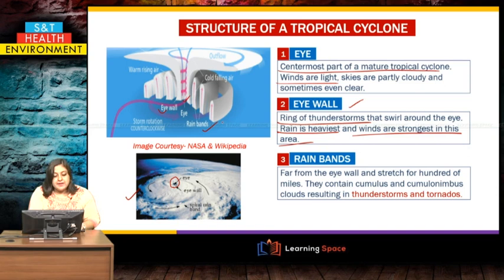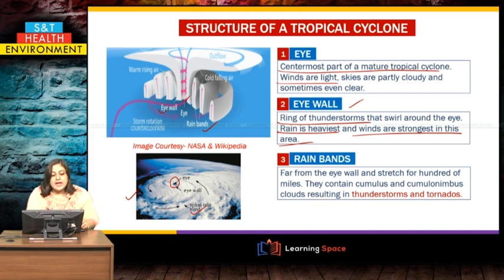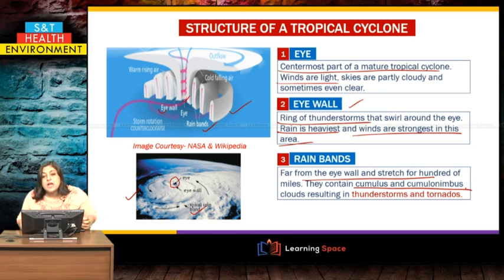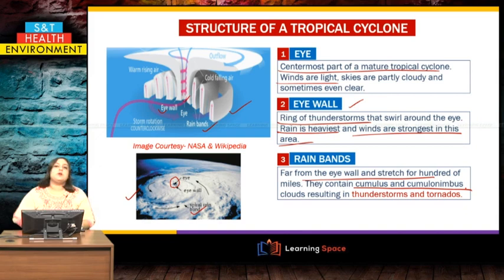The eye wall has the strongest winds and the maximum rainfall. Beyond the eye wall are the rain bands — alternating bands extending outward across the entire cyclone. These bands contain cumulus and cumulonimbus clouds, which are rain-laden and moisture-laden, resulting in thunderstorms, tornadoes, and huge amounts of rainfall wherever they strike land.